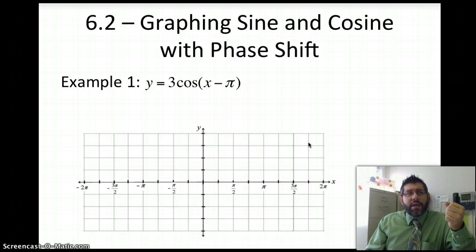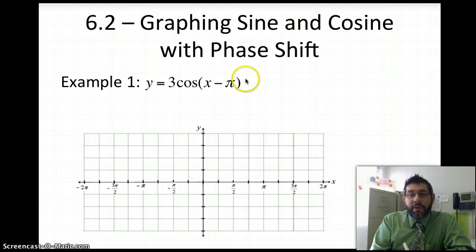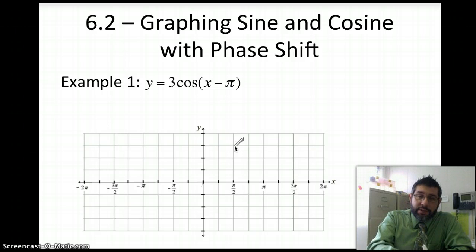So a phase shift is simply a shifting of the graph left or right horizontally. If we added a number on the outside, then that would shift it up or down. And recall that when we're dealing with functions...